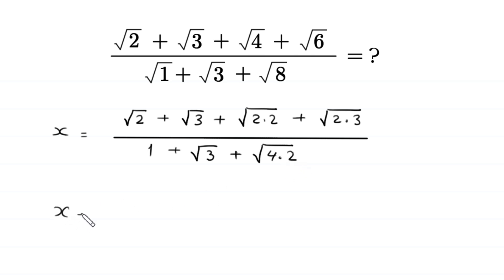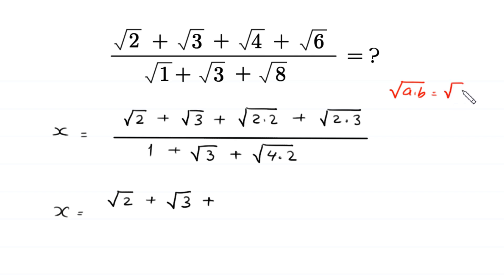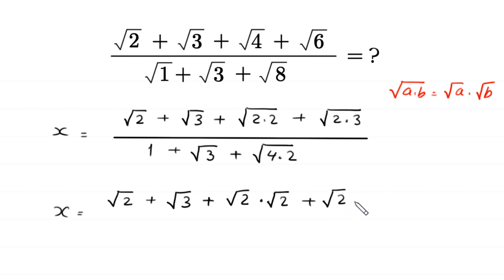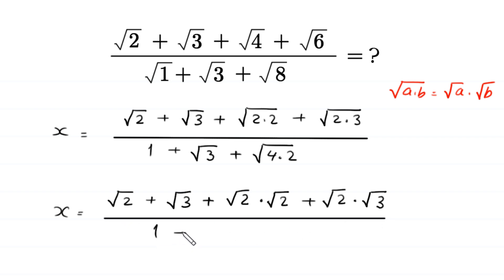Next, x is equal to square root of 2 plus square root of 3, and by using the property that square root of a times b equals square root of a times square root of b: this square root of 2 times 2 becomes square root of 2 times square root of 2, and this square root of 2 times 3 becomes square root of 2 times square root of 3, divided by 1 plus square root of 3 plus square root of 4 times square root of 2.